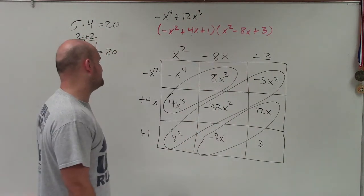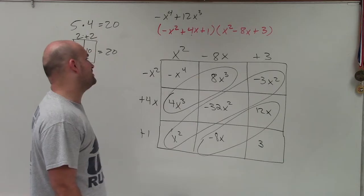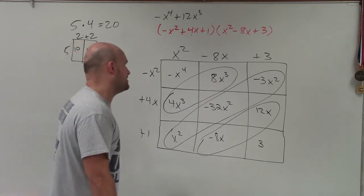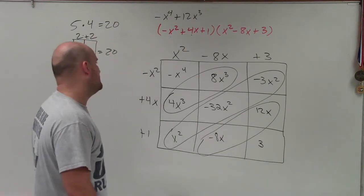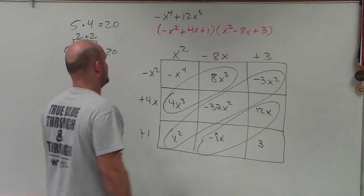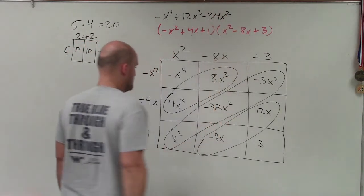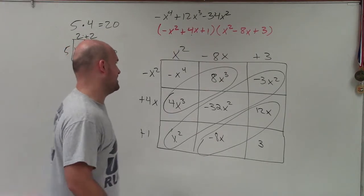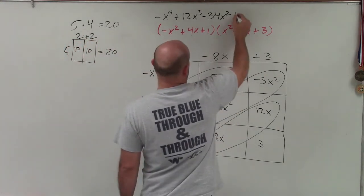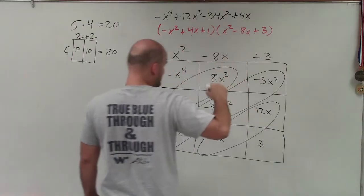Then over here I have x squared minus 32x squared minus 3x squared. So that'd be a negative 35. So that'd be a negative 34x squared. And then I have negative 8x and positive 12x, which is a positive 4x. And then plus 3.